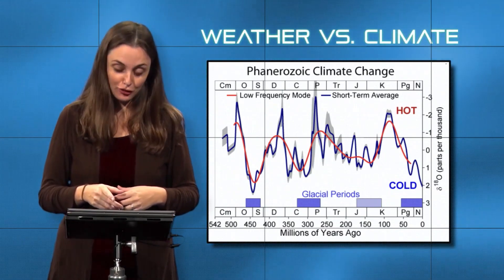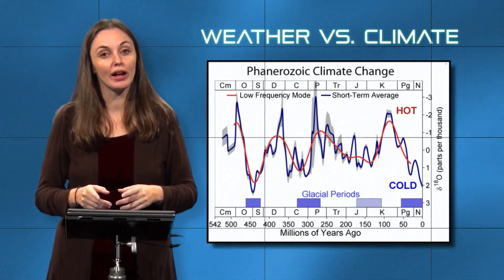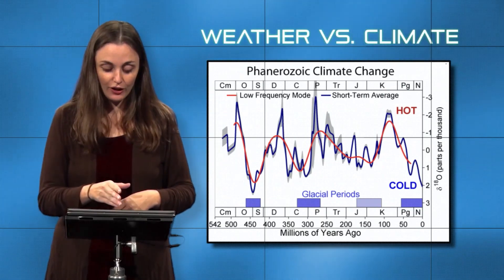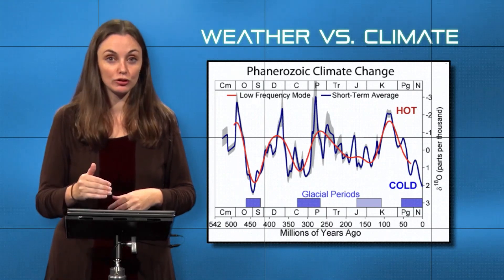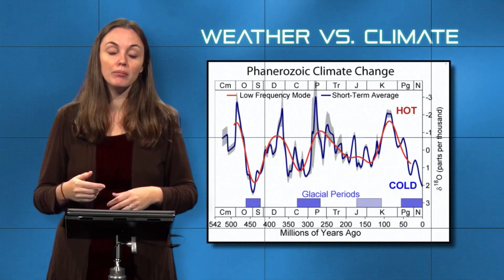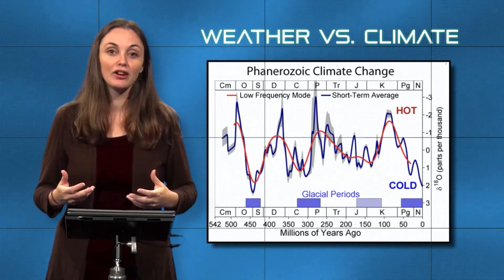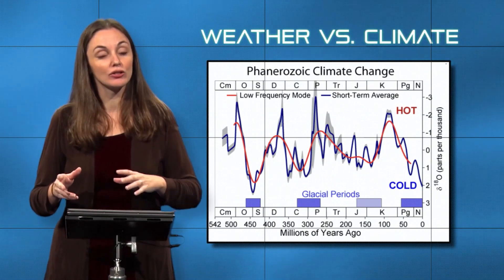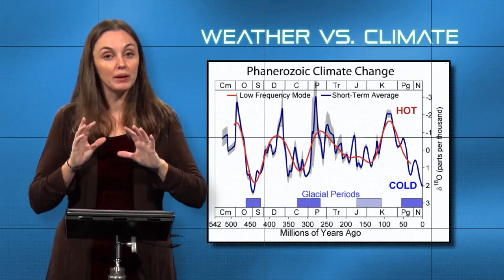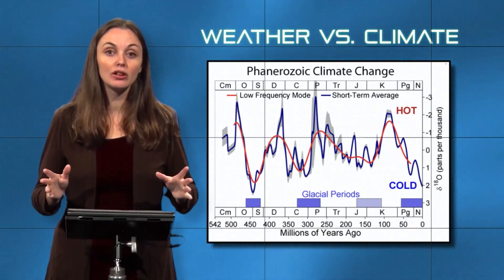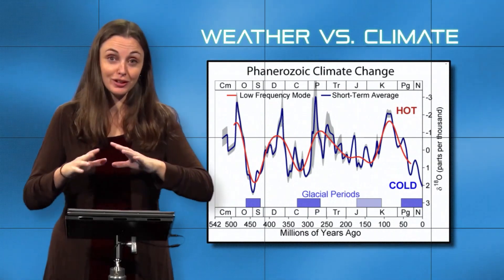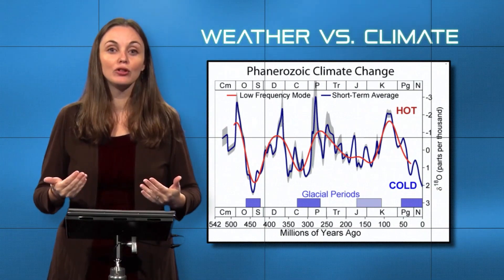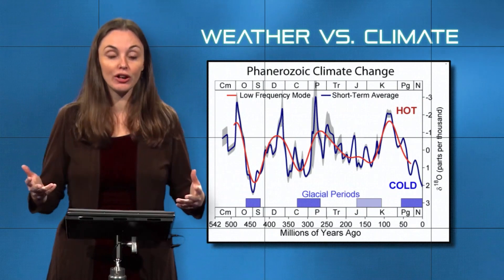I want to point out two particular points on this graph — two mass extinctions. One is at the end of the Permian, about 250 million years ago, where we see a very steep warming trend brought about by the release of CO2 from massive volcanism as Pangea was beginning to break apart. This release of CO2 into the atmosphere set off the biggest mass extinction in our planet's entire history — 95% of marine species and 70% of terrestrial species went extinct. The key message: when climate changes too fast for life to evolve and keep up, the result is massive eradication of species.